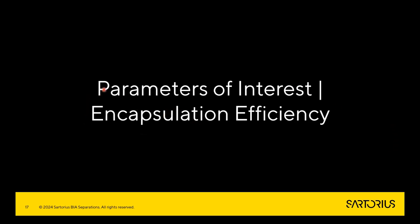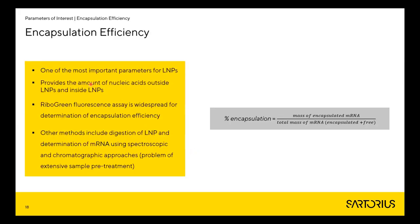The first parameter I want to talk about is encapsulation efficiency, one of the most important parameters for LMPs. It provides the amount of nucleic acid outside and inside the LMP. Usually the ribo-green fluorescence assay is used for determination of encapsulation efficiency, as well as other methods including digestion of LMP and determination of mRNA using spectroscopic or chromatographic approaches. But all these techniques require extensive sample pretreatment, which we want to avoid.